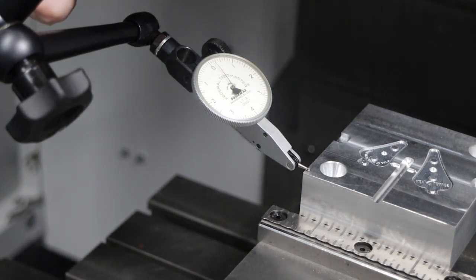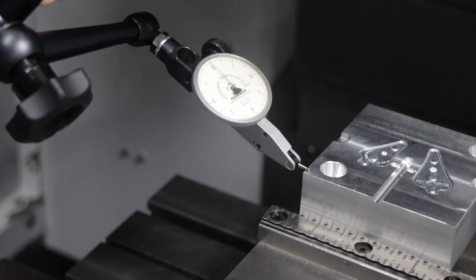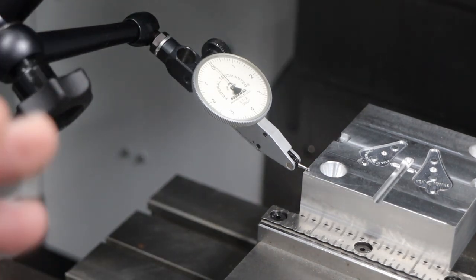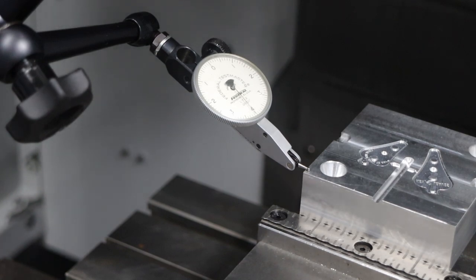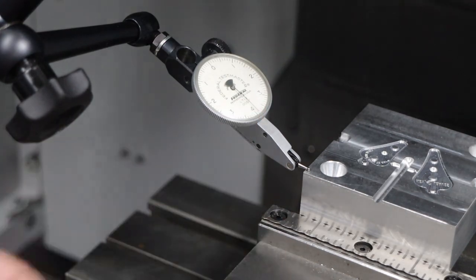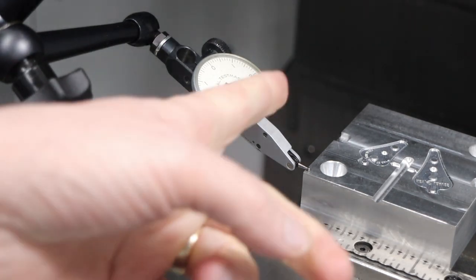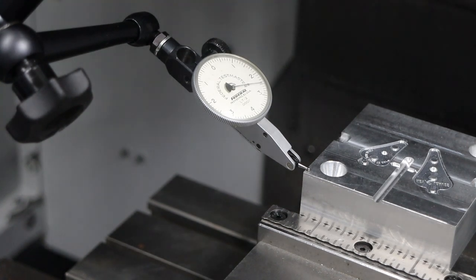I'm going to use the fine adjust on the Noga. All right, so that's reading zero. It may be hard to tell from your perspective because of parallax. And now when I tighten this, you can see it's lifting five and a half thousandths of an inch. So that's pretty scary.